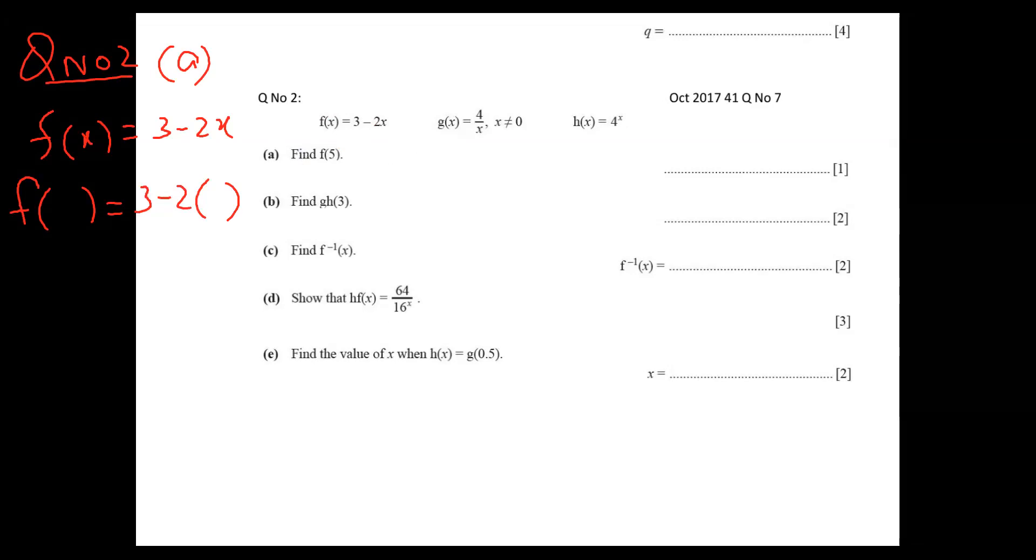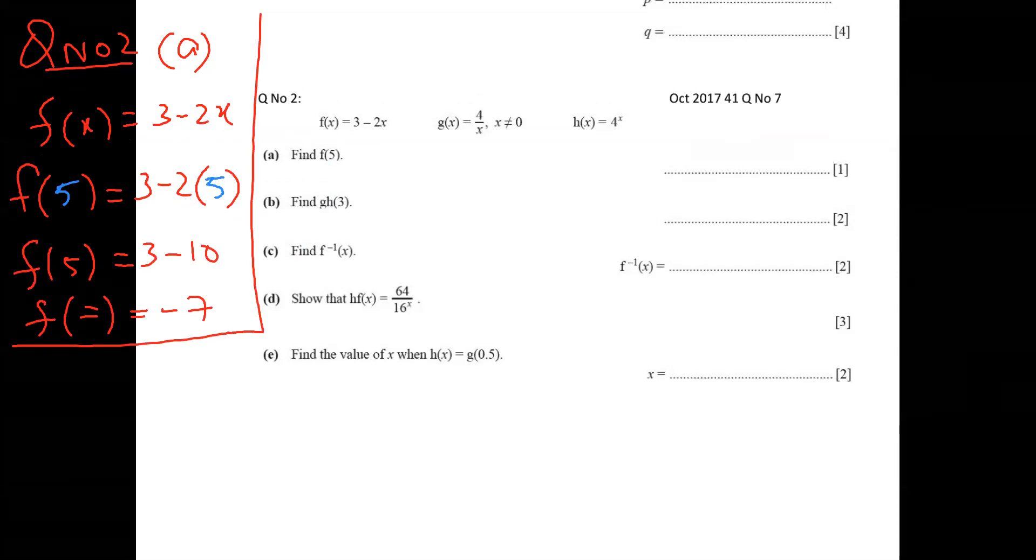Now, how many x's we have empty spaces? I leave empty spaces and then I put this five here and here. I put five here and I put five here. So after this, I will solve it. f of five equals three minus two, five is ten. And I got the answer is minus seven.